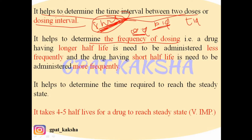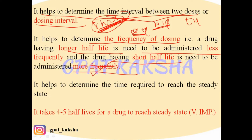If a drug has a longer half-life, it needs to be administered less frequently, because its metabolism is slower and its retention in the body is for a longer period. If a drug has a short half-life, it gets depleted very fast from the body, so it needs to be taken more frequently to keep the concentration above the therapeutic level.